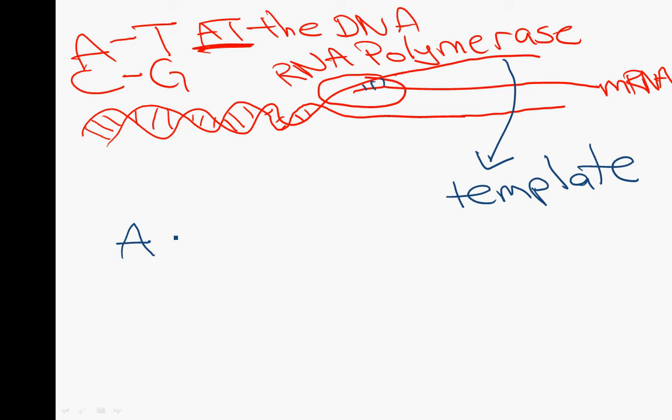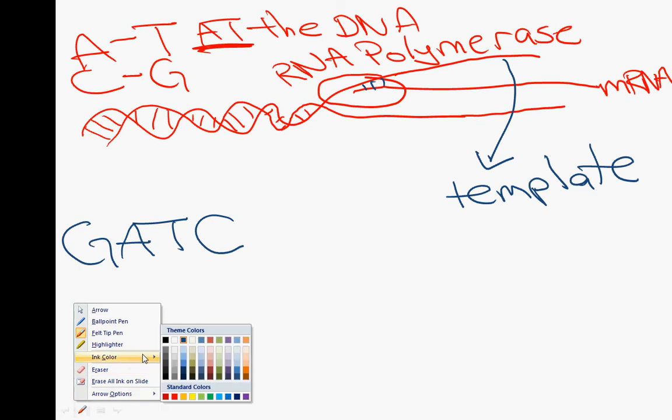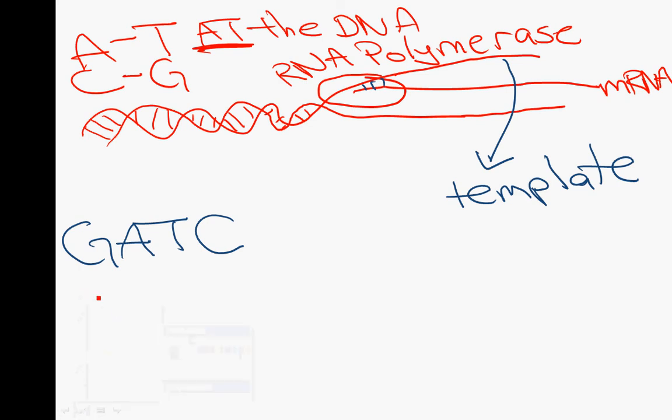That's right. We've got our complementary base pairing rules. So let's say we have this strand of our template. The mRNA is going to be complementary. So here we have DNA on the top. Let's make our RNA in red. So we've got C, U.